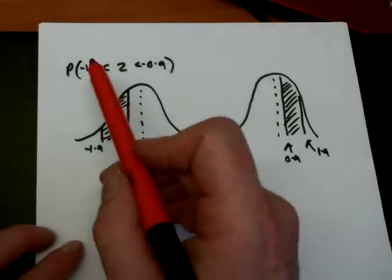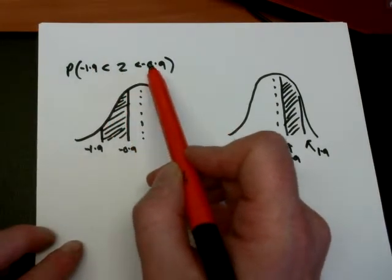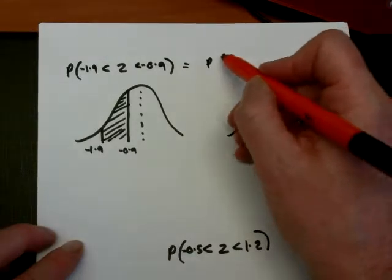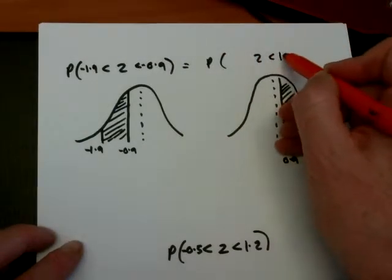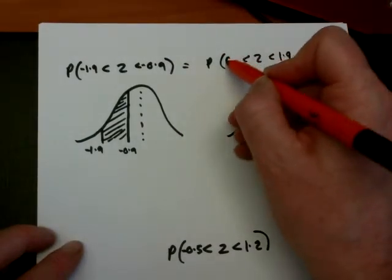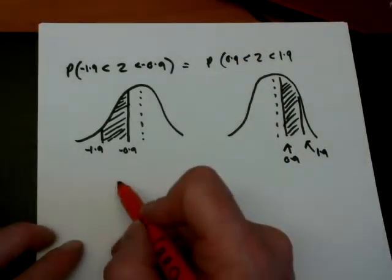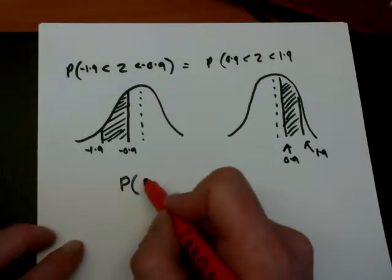So the probability that I'm between minus 1.9 and minus 0.9 is exactly the same as the probability that I'm between plus 1.9 and greater than 0.9. So you will have seen from previous work that that can be worked out quite simply.